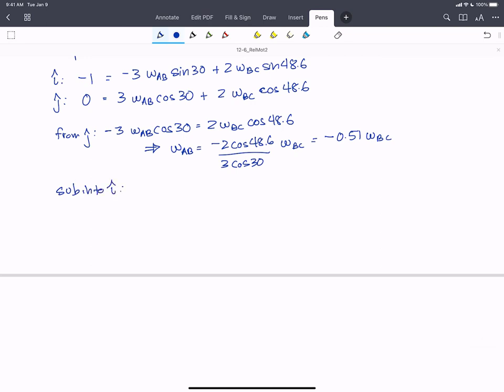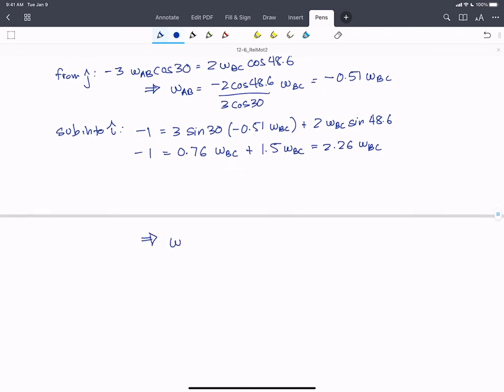Now we're going to take that expression and sub it into our i-hat equation. And so we get minus 1 equals 3 sin 30 times minus 0.51 omega BC plus 2 omega BC sin 48.6. So that's minus 1 equals 0.76 omega BC plus 1.5 omega BC. And that together equals 2.26 omega BC. If we solve for omega BC, we find the scalar omega BC equals minus 0.44 rads per second.